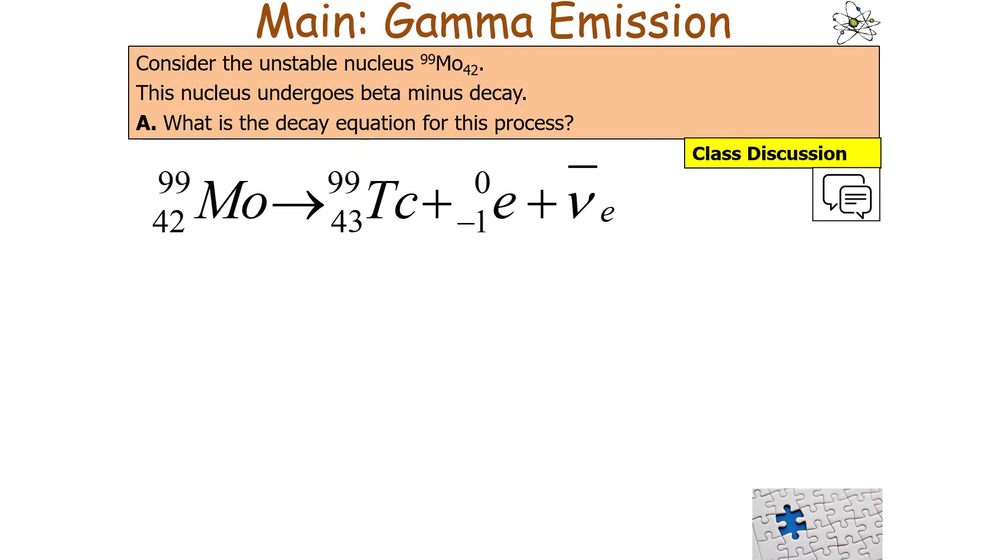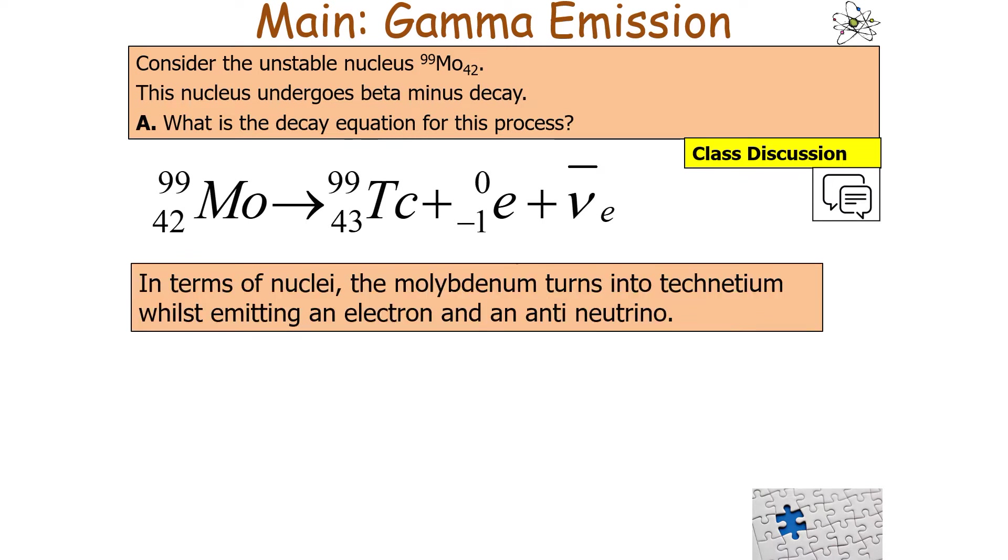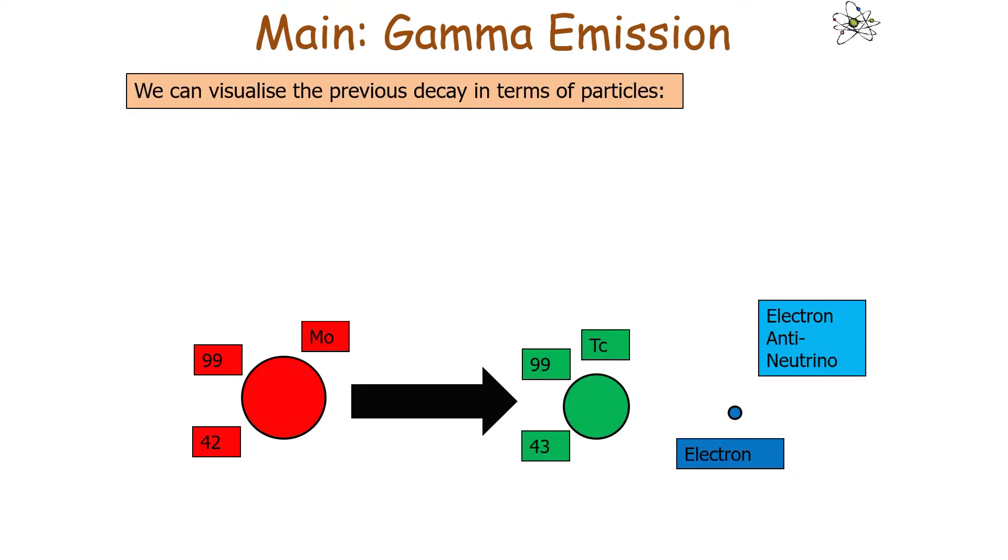We'd have this particular equation in terms of nuclei: our molybdenum turns into technetium whilst emitting an electron and an antineutrino.